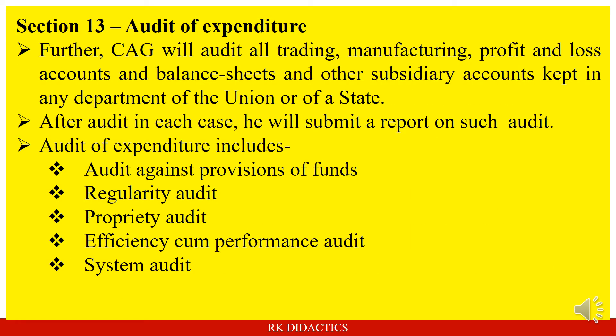CAG will audit all trading, manufacturing, profit and loss accounts and balance sheets and other subsidiary accounts kept in any department of the union or of a state. After audit, in each case, CAG will submit a report on such audit. So Section 13 empowers CAG to submit a report on audit.